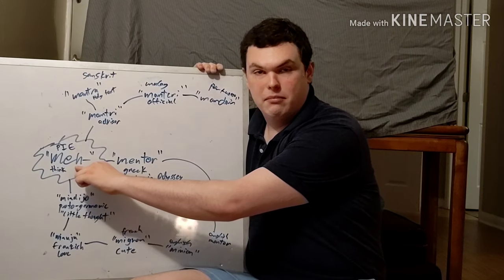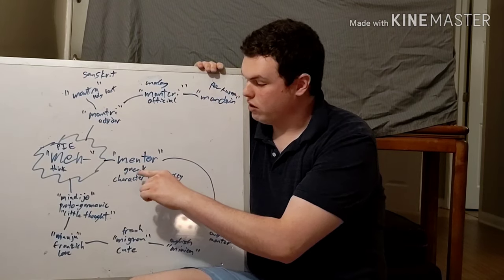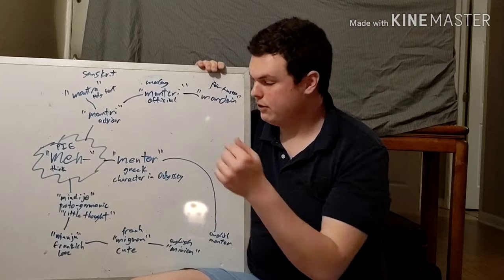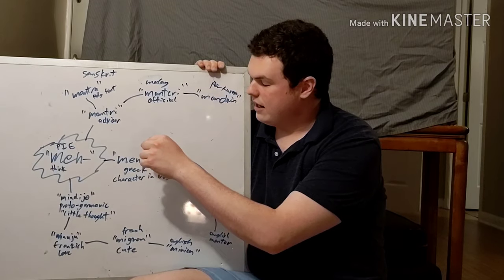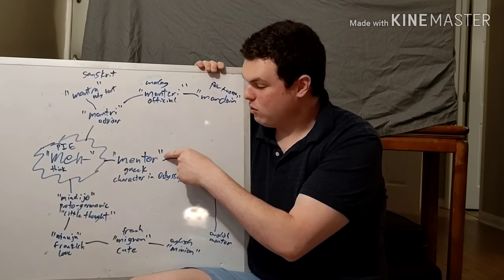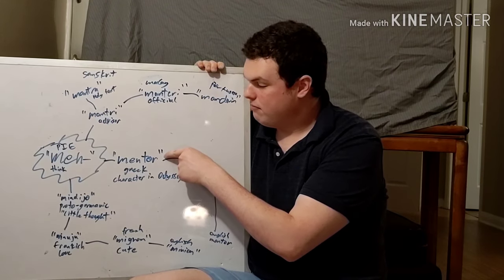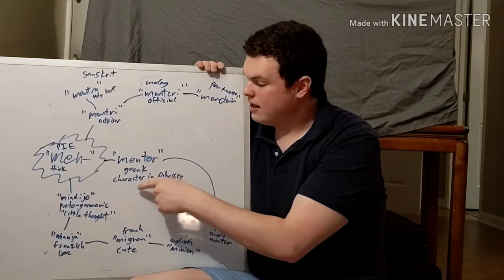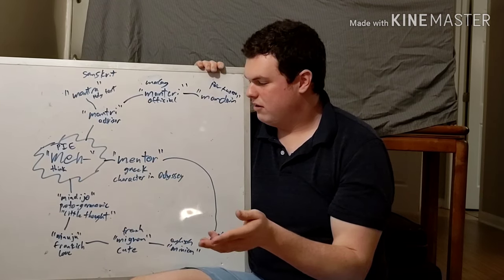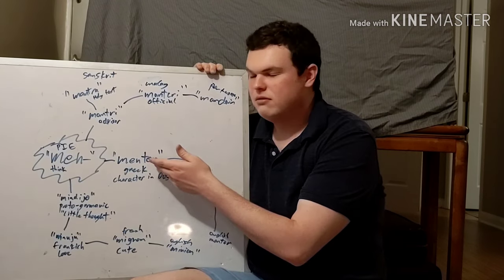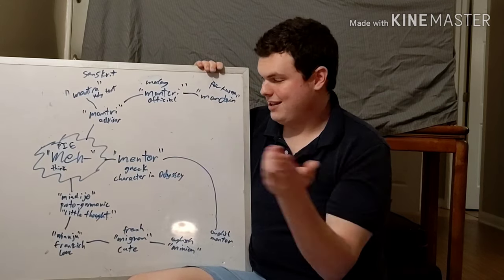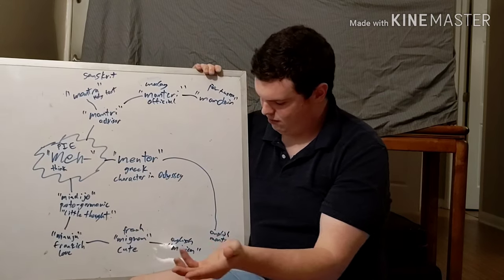This stem also leads us to a Greek word. Greek is another Proto-Indo-European language, and it gives them the word 'mentor', which was a character in the Odyssey. So 'mentor' is someone who thinks — makes sense, right?